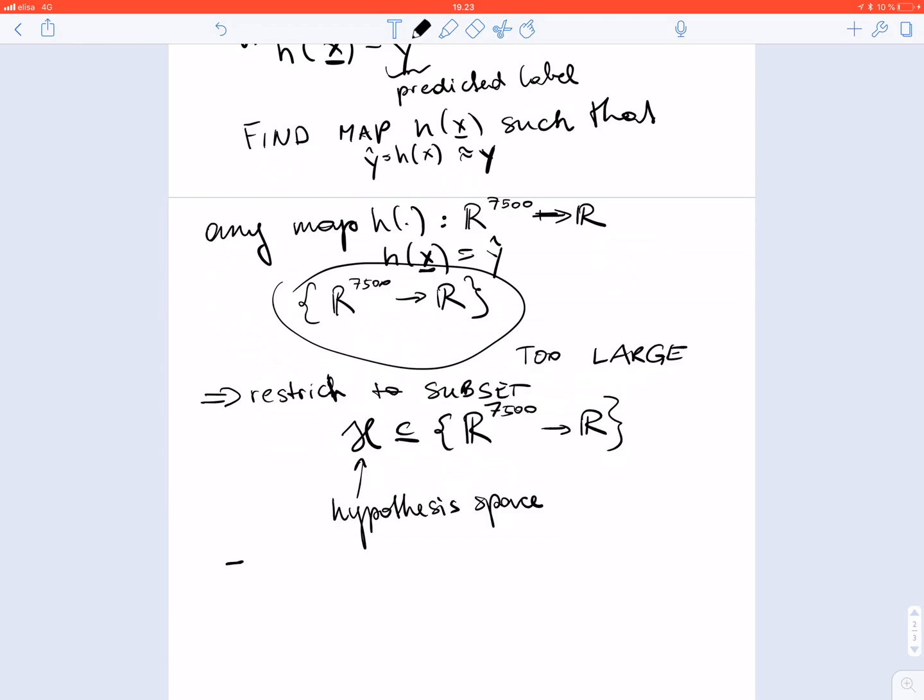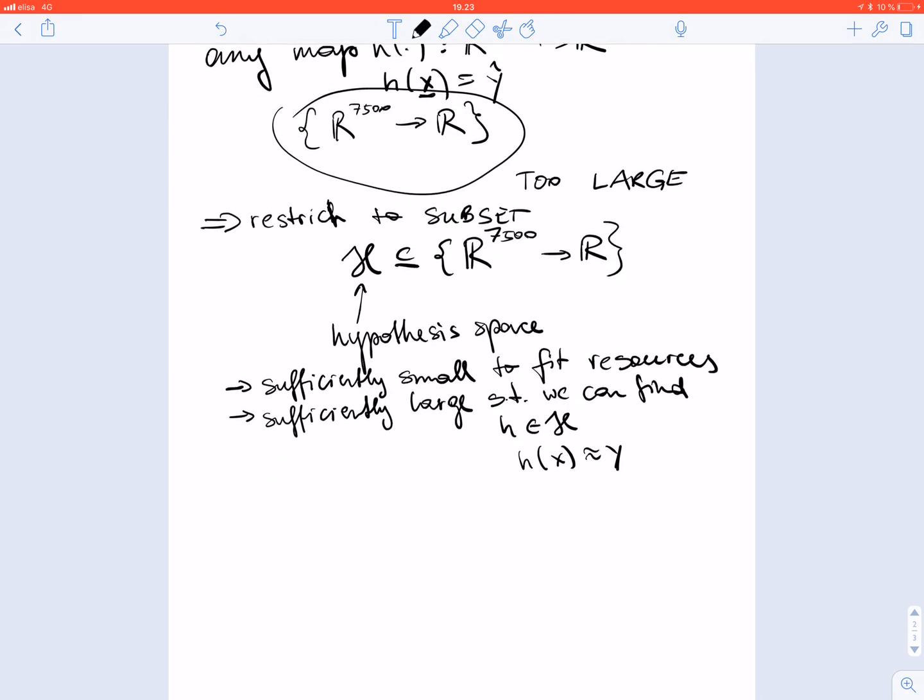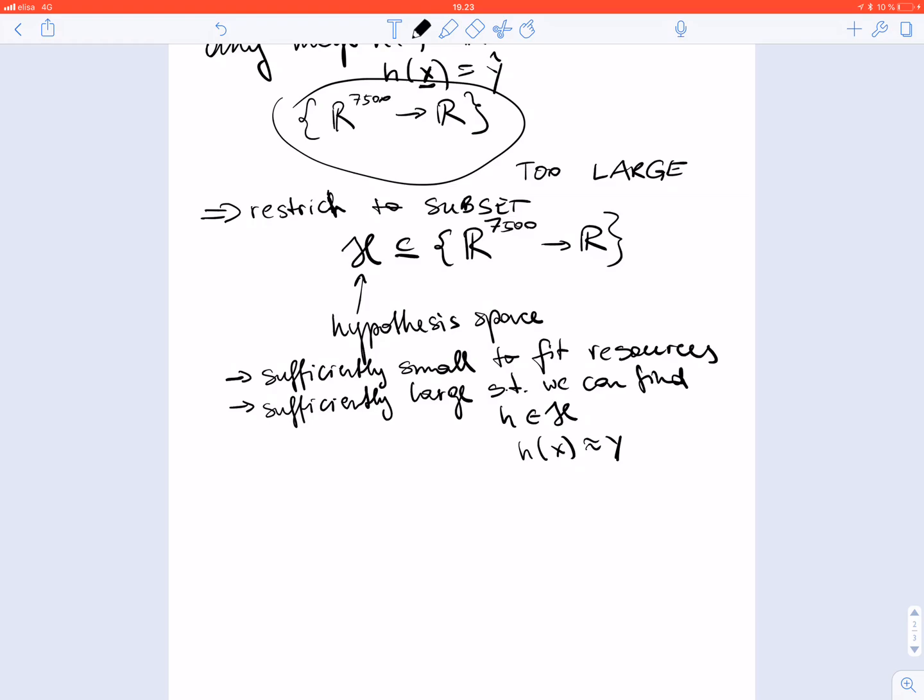We choose this hypothesis space such that it's sufficiently small to fit the resources or to be able to be implemented using the available resources. However we must also ensure that this hypothesis space is sufficiently large such that we can find a good hypothesis, such that there is a hypothesis in this space where the predicted label is a good approximation of the true label.